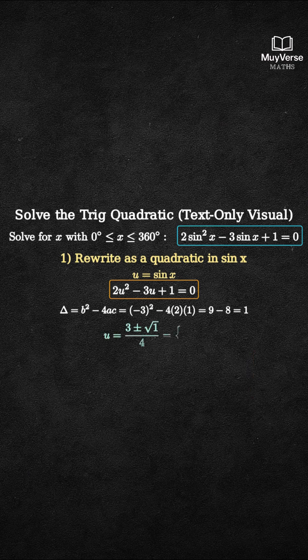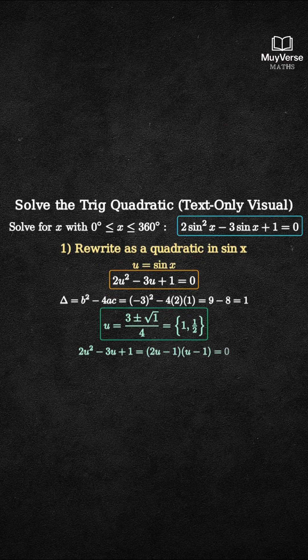Therefore, u equals 3 plus or minus 1 over 4. So the two values are u equals 1 and u equals 1 half. You can also see this instantly by factoring 2u minus 1 times u minus 1 equals 0.